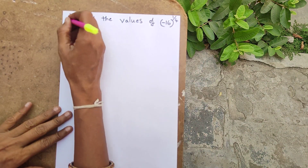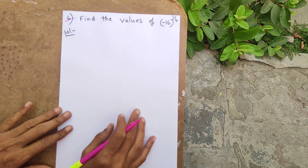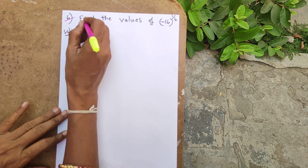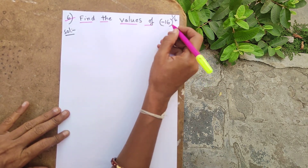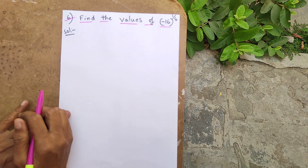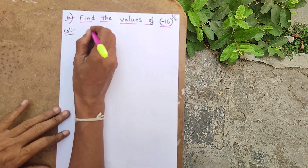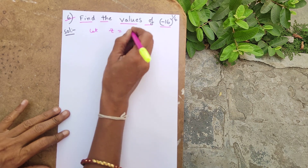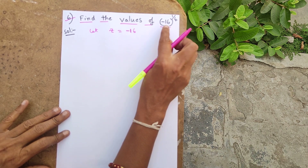The question is to find the values of (-16) to the power of 1 by 4. Here, z is equal to minus 16.